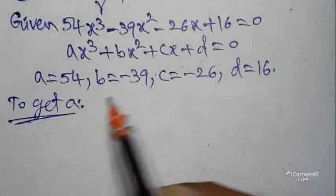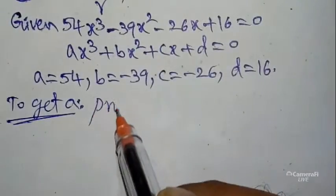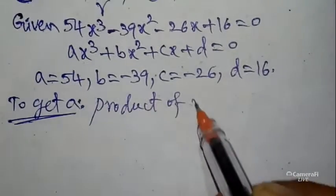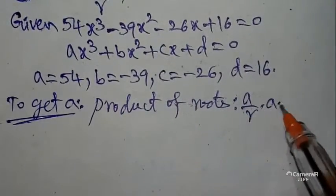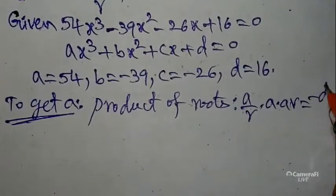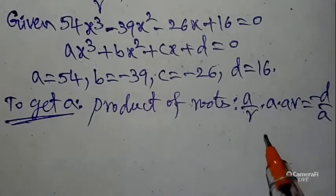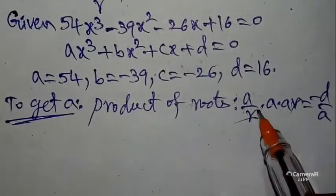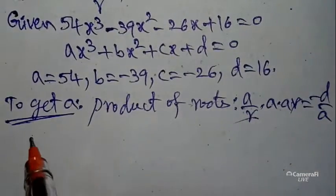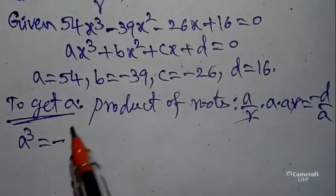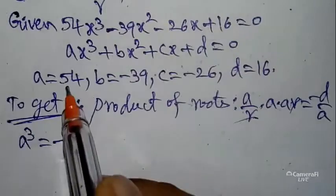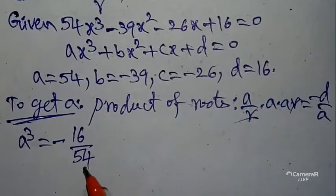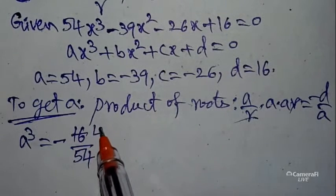To get the value of a in geometric progression, use the product of roots. Product of roots: (a/r) × a × ar = −d/a. This is our short trick. Here r and r cancel, so a × a × a = a³ = −d/a = −16/54.